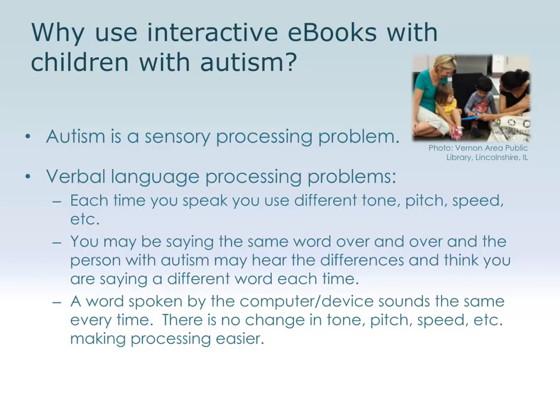Even if I'm going to make a custom sensory storytime social story and record my own voice, they are still going to process that as the same thing each time they play it. It's important to understand the actual advantages that digital stories have with individuals with autism — because it is saying the same thing in exactly the same tone and pitch each time, they're able to process that better instead of trying to work with the human element, which is going to be different each time. That is the reason I am a proponent of using interactive ebooks within sensory storytimes and with individuals with autism.